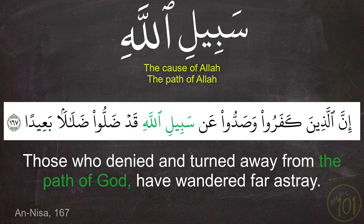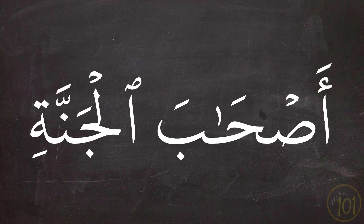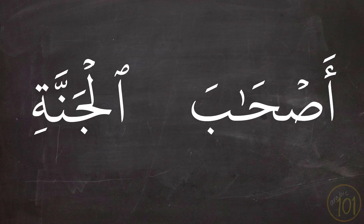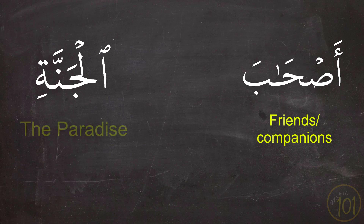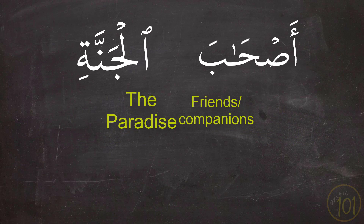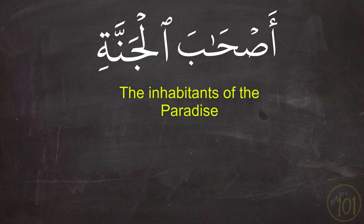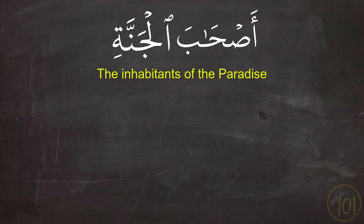Another example: إِنَّ الَّذِينَ كَفَرُوا وَصَدُّوا عَنْ سَبِيلِ اللَّهِ قَدْ ضَلُّوا ضَلَالًا بَعِيدًا. Next is the combination أَصْحَابَ الْجَنَّةِ, made up of أَصْحَابَ, meaning 'friends or companions,' and الْجَنَّةِ, meaning 'paradise.' The combination means 'the inhabitants of paradise,' and we see it used in these examples.